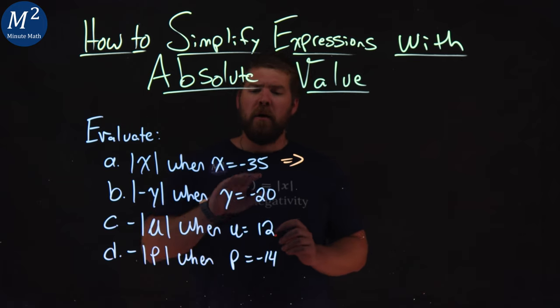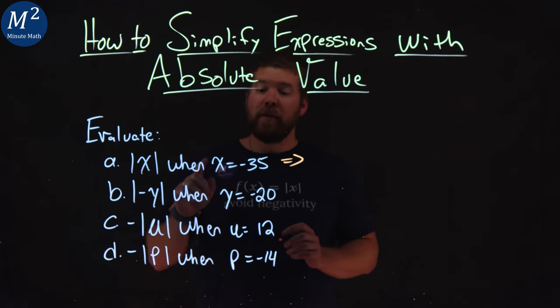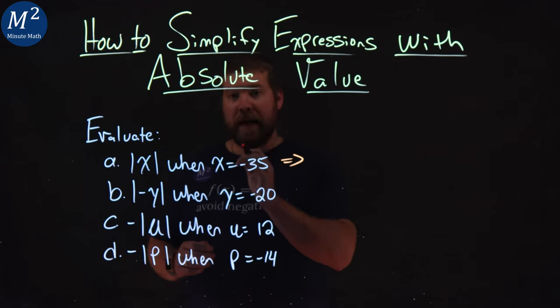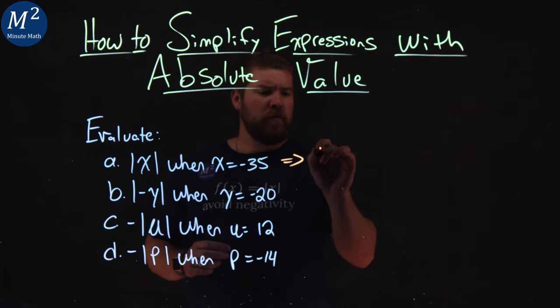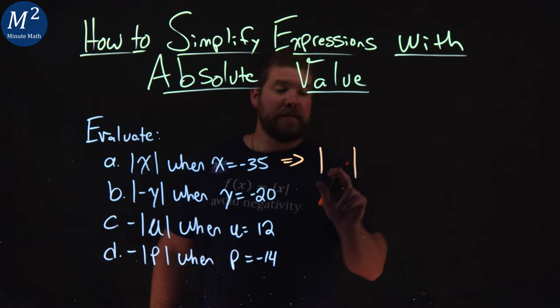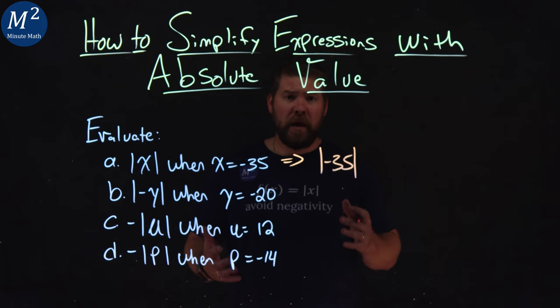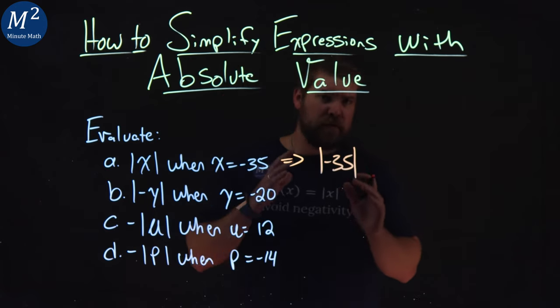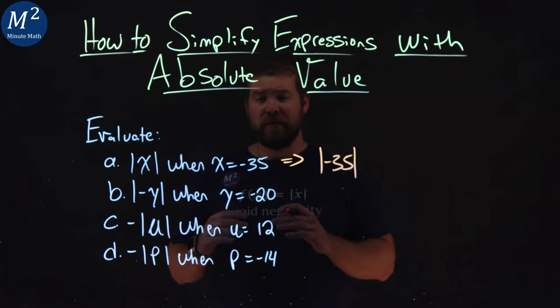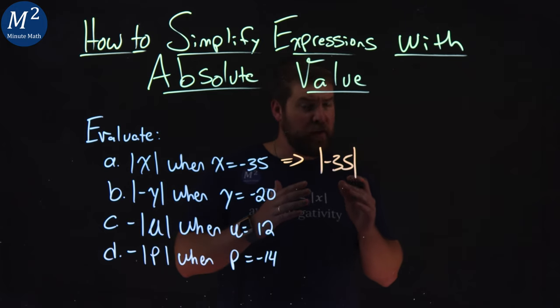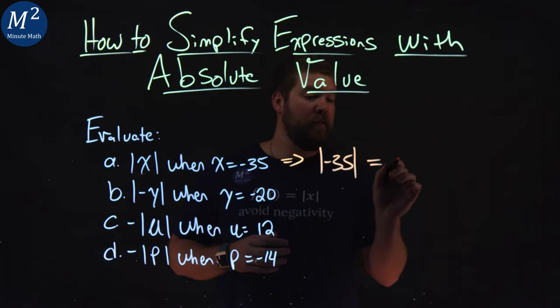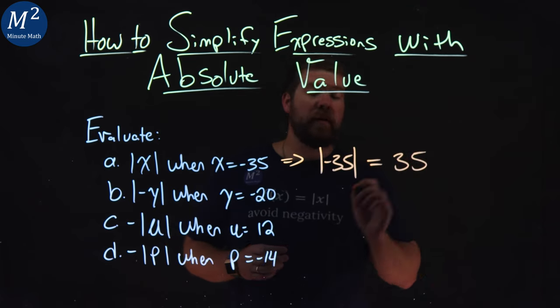So the first part A, when x is negative 35, I'm going to take this negative 35 and substitute it in for x directly. So absolute value here, instead of x, negative 35 comes in. From there, we just simplify what we know about absolute values, the distance from zero. Negative 35 is a distance of 35 on the number line to zero. So the absolute value of negative 35 equals a positive 35.